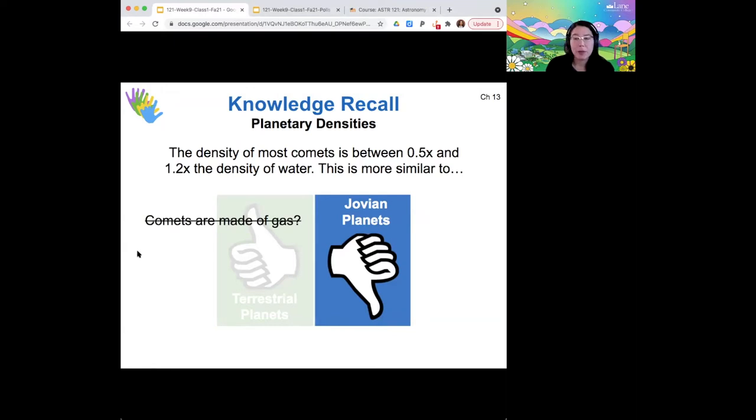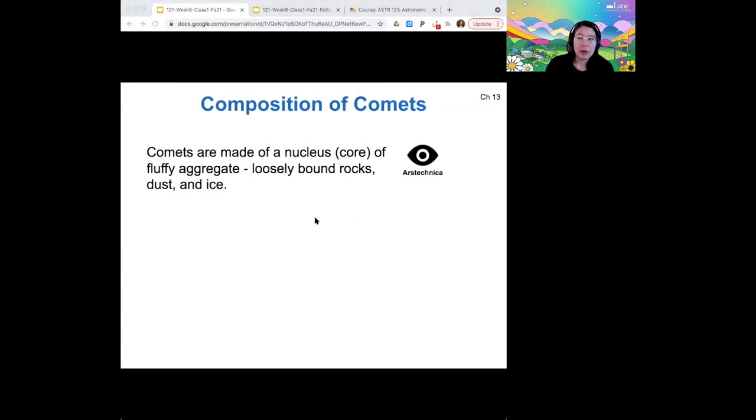Because as we mentioned before, having a low density doesn't necessarily mean that your composition is something specific. It could just mean that they're fluffy, that they contain a lot of empty space. And so that is essentially what comets are.